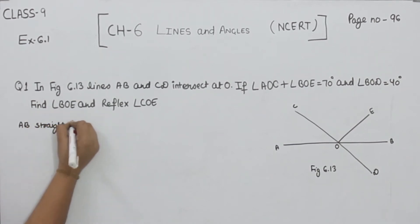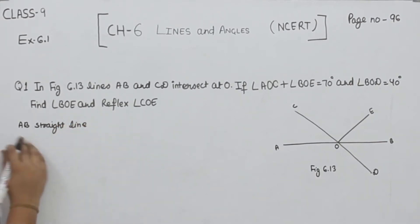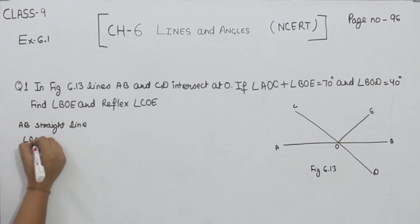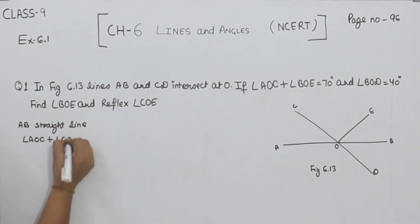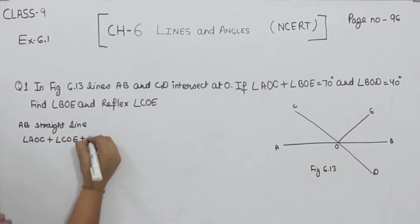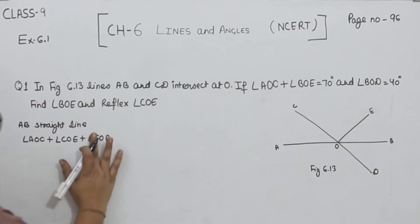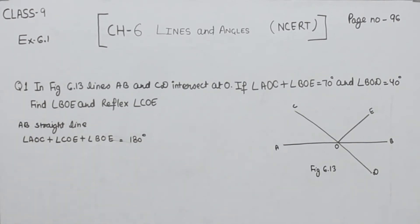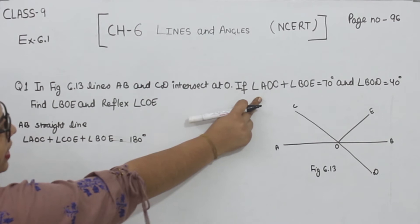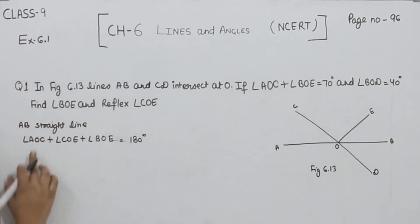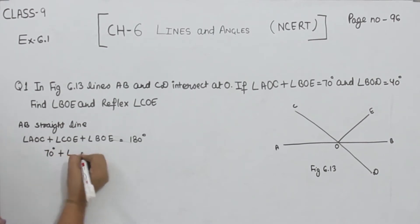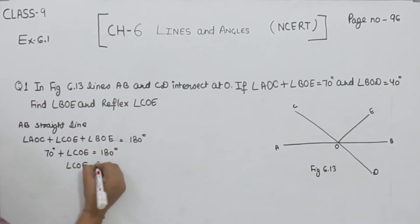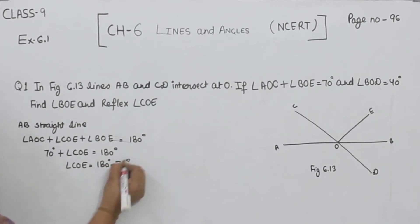As given in the figure, if we take AB as a straight line, AB has three angles: the first is angle AOC, the second is angle COE, and the third is angle EOB or angle BOE. These are equal to 180°, since AB is a straight line. As given in the equation, angle AOC plus angle BOE is equal to 70°, so we put: 70 plus angle COE is equal to 180°.